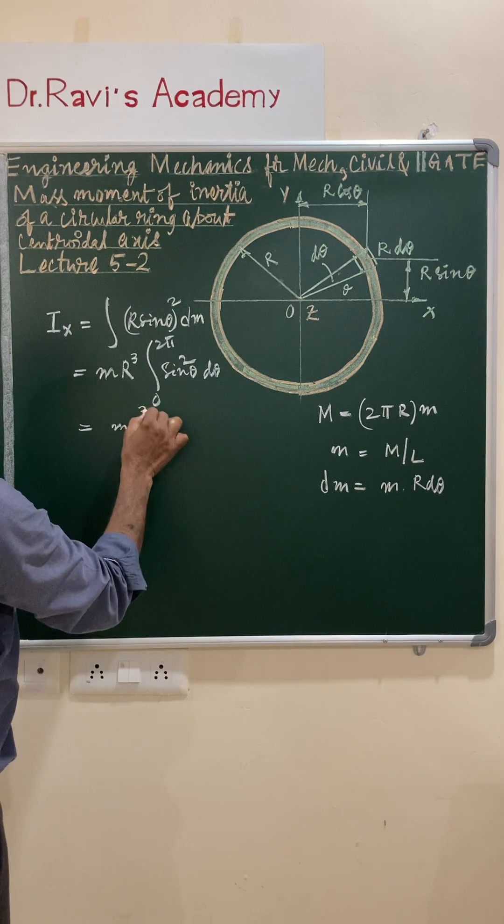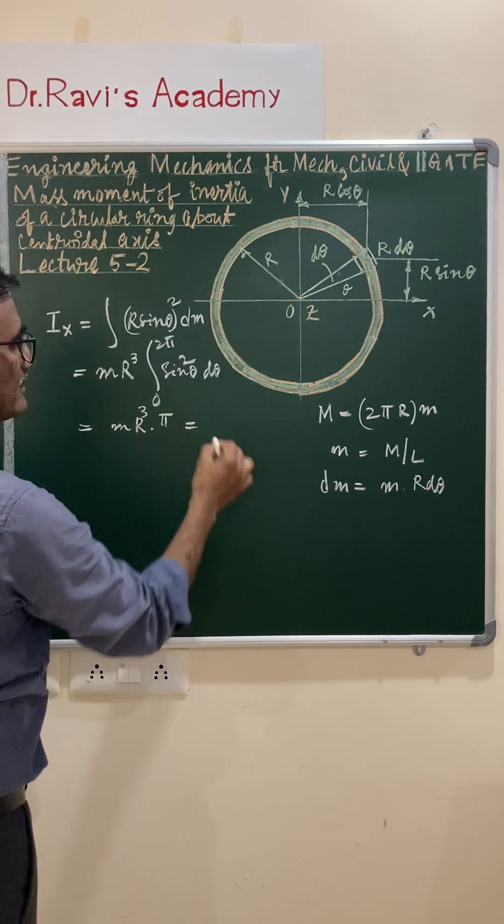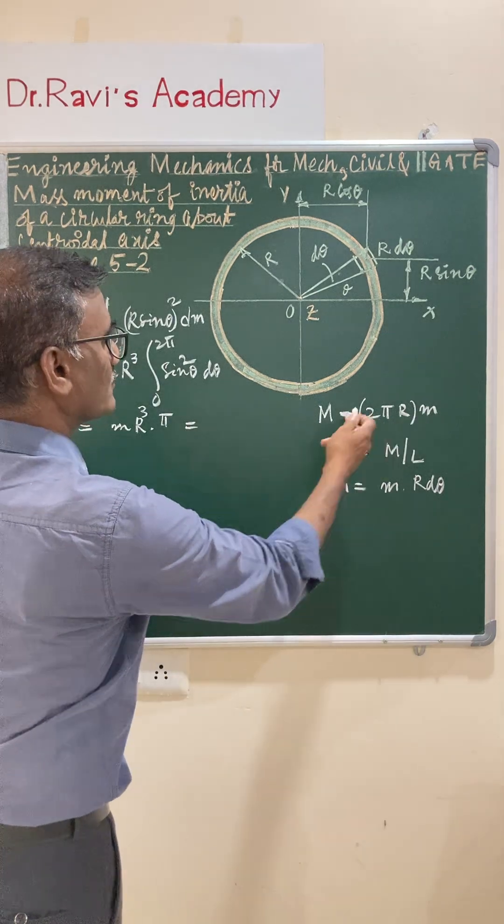So mr³ into π, and m value substitute from this—m is equal to capital M divided by 2πr.